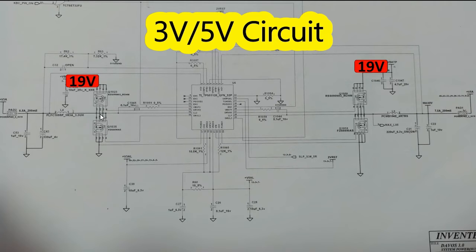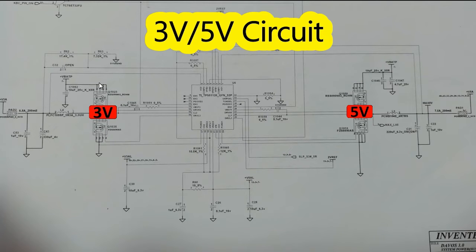From 19V we get 3V here and 5V here, as you can see in the animation — 19V to 3V and 19V to 5V — using the same components, the same MOSFETs. We have the same MOSFET reference yet we get different voltages. So how does this work? Let's analyze the circuit.